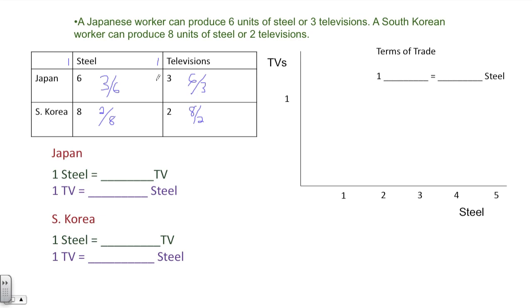The next thing I need to do is to reduce down all of these fractions. Three over six can be reduced down to one half. And what this represents is the opportunity cost in production of steel. So one steel for Japan costs them a half of a TV. Over here, one TV costs Japan two steel. Likewise, for South Korea, when they focus on steel production, their cost is one fourth of a TV. And for South Korea, one TV costs them four steel.